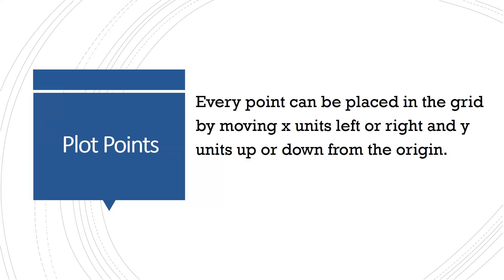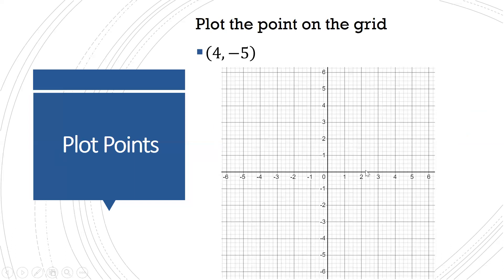Every point can be placed on this grid. Because the x axis is the horizontal axis, when we have a point with an x value and a y value, we move horizontally x units and vertically y units. For the x direction, positive numbers move to the right from the origin and negative numbers move to the left. For the y direction, positive numbers go up and negative numbers go down.